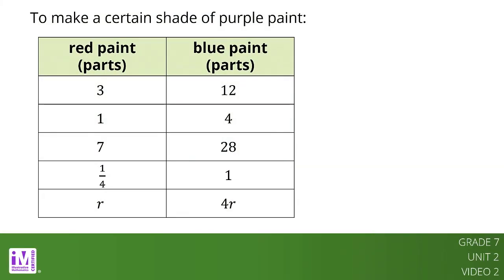This table shows the amount of red paint and blue paint needed to make a certain shade of purple paint called Venusian sunset. Notice that the paint is being measured in parts. This means they can be any unit of volume. For example, if we mix 3 cups of red paint with 12 cups of blue paint, we will get the same shade as if we mix 3 teaspoons of red paint with 12 teaspoons of blue paint.